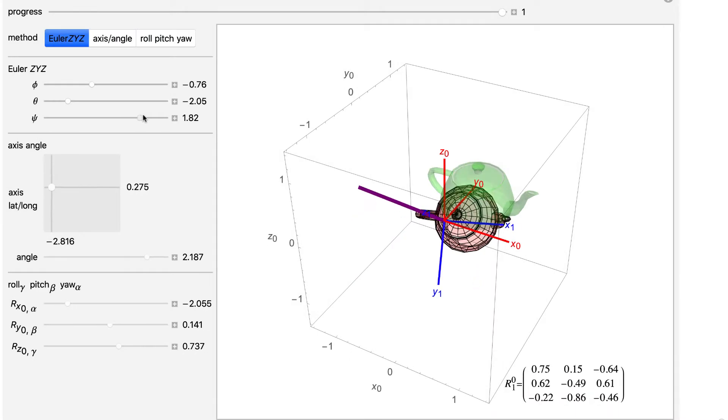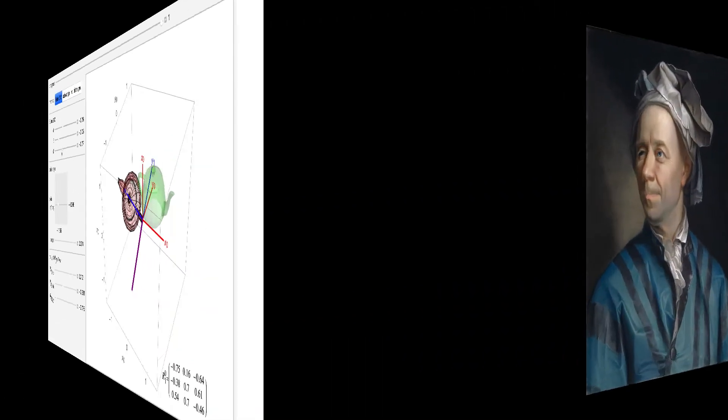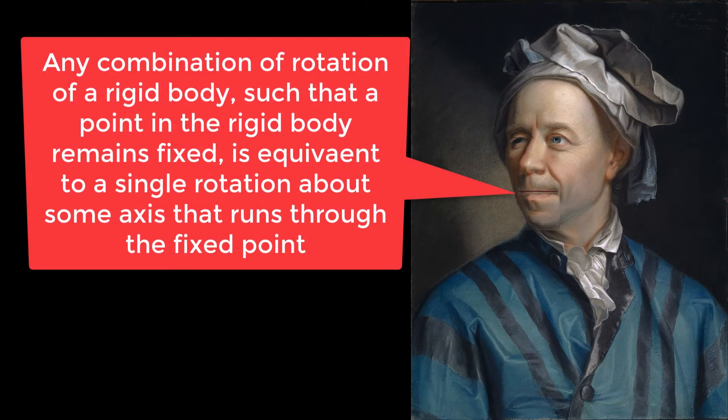The same rotation matrix can be parameterized in many other ways. Euler's rotation theorem states that any combination of rotations of a rigid body, such that a point in the rigid body remains fixed, is equivalent to a single rotation about some axis that runs through the fixed point.